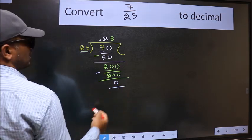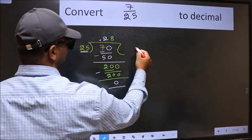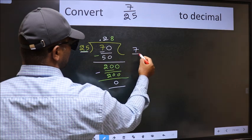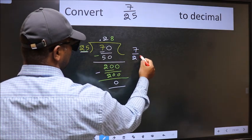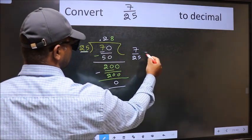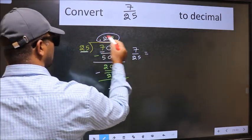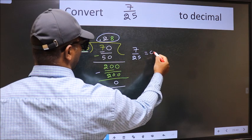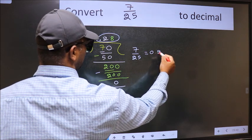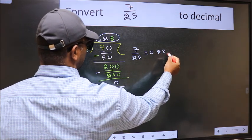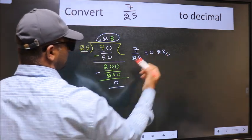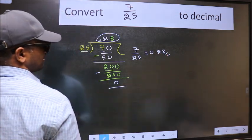Therefore, the decimal of 7 by 25 is 0.28. That is our answer. Thank you.